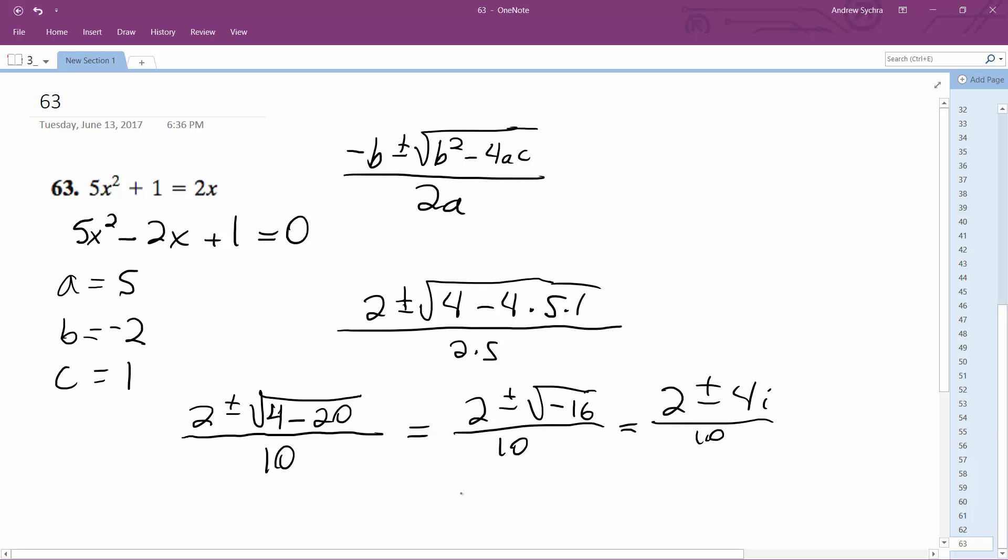And finally, this simplifies down to 1 over 5 plus or minus 2 over 5i. Okay, that's it.